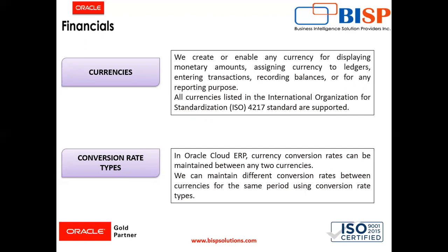Conversion rate type — in Oracle Fusion applications, we can use currency conversion rates between any two currencies. We can maintain different conversion rates between currencies for the same period using conversion rate types, and we can use these different rate types for different business needs. There are some predefined conversion rate types in the system, which are spot rate, corporate rate, user, and fixed rate type. These rate types can be used to automatically assign rates and perform specific functions in the general ledger applications.